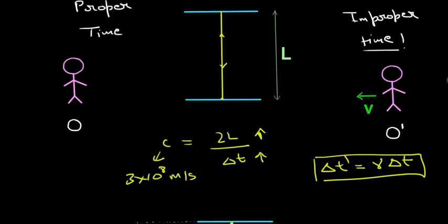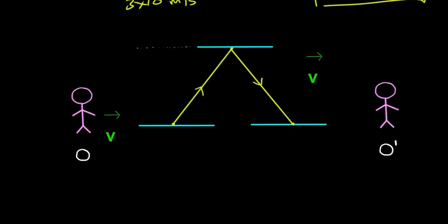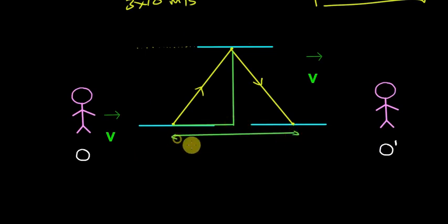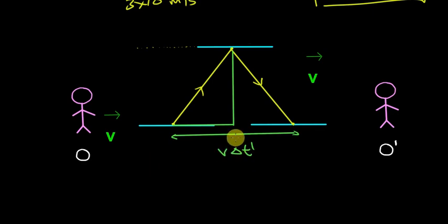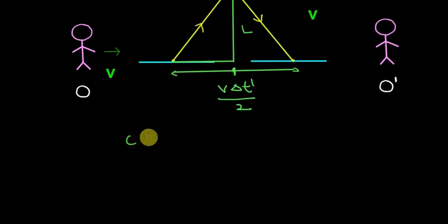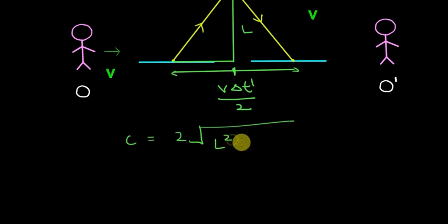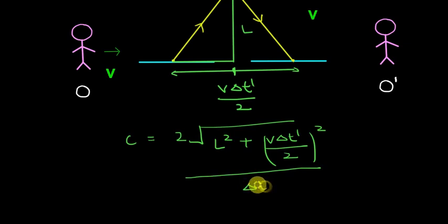Now we will evaluate this gamma factor using basic trigonometry. Making a simple right-angle triangle: the horizontal base is v·delta_t_dash divided by 2 — the distance traveled by the mirrors in delta t dash time. The perpendicular is simply L, because the mirrors are L apart. The speed of light c equals 2 times the square root of L² plus (v·delta_t_dash / 2)², all divided by delta t dash.